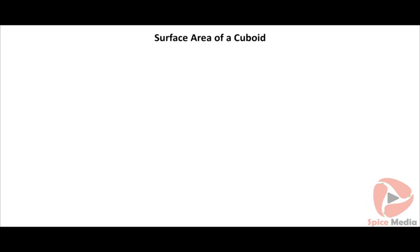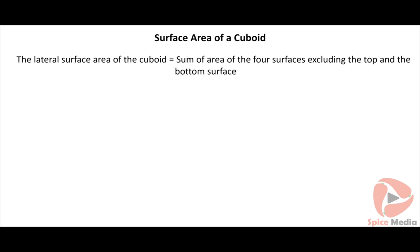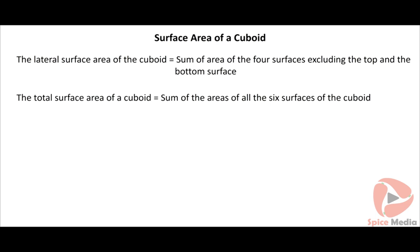The lateral surface area of a cuboid is obtained by calculating the sum of the areas of the four surfaces of the cuboid, excluding the top and the bottom surface. The total surface area is found by adding the areas of all six surfaces of the cuboid. Click the animation button to view the animation for the formulas.